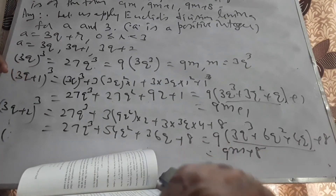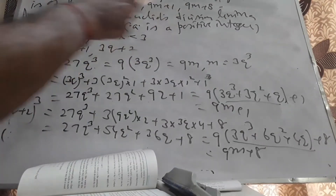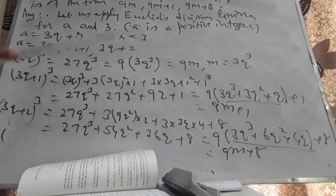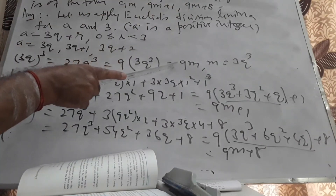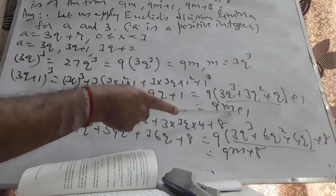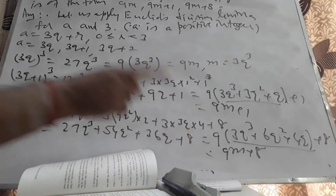Therefore the cube of any positive integer will always be of the form 9m, or 9m+1, or 9m+8.